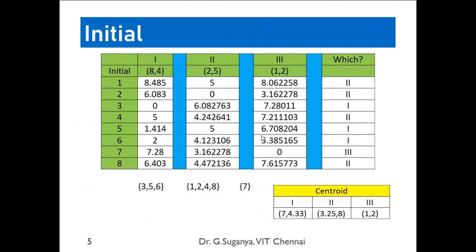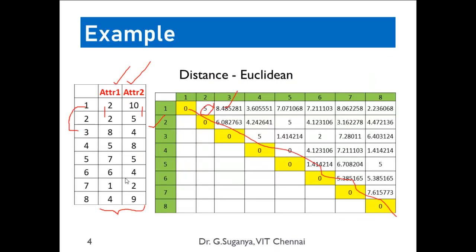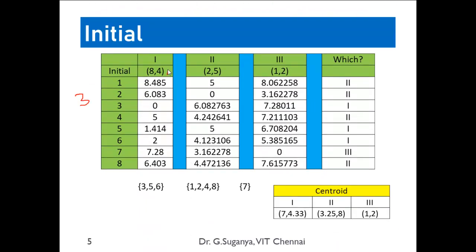The first epoch starts with the initial random pickup of k and the corresponding leaders. I have initialized k to 3, so 3 leaders have to be picked from the dataset — either from the dataset itself or as random values within the range. I have picked 3 representative leaders: (8,4) is the first leader, (2,5) is the second leader, and (1,2) is the third leader.